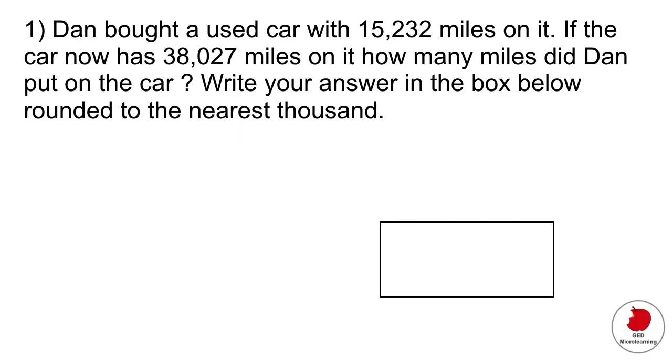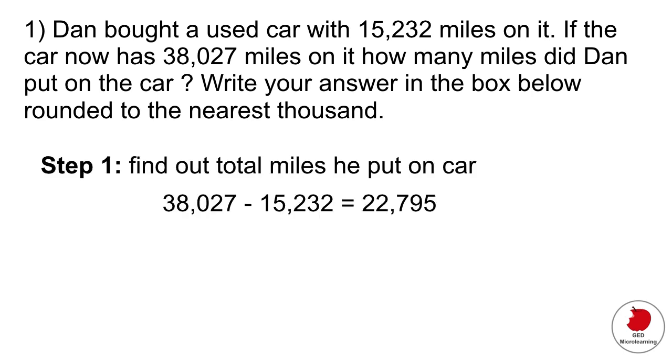The first question is a fill-in-the-blank and it says, Dan bought a used car with 15,232 miles on it. If the car now has 38,027 miles on it, how many miles did he put on the car? Write your answer rounded to the nearest thousand. So first of all, we need to find out the total miles he put on the car. We would just subtract that current amount of miles minus the original amount. That gives us 22,795.